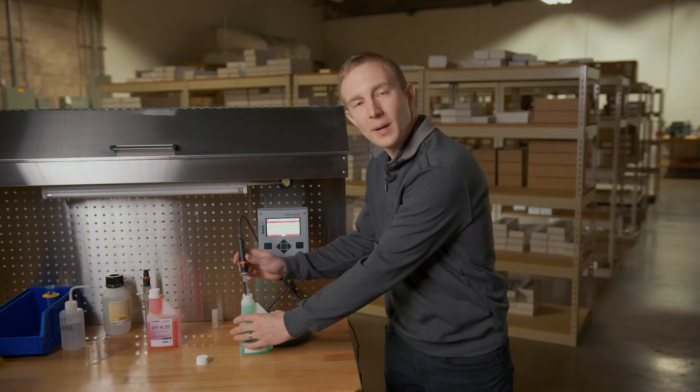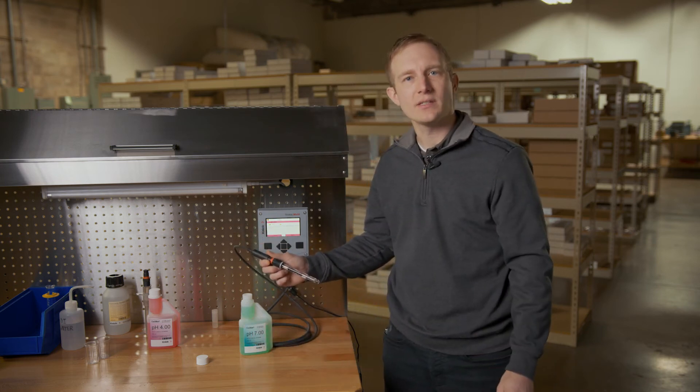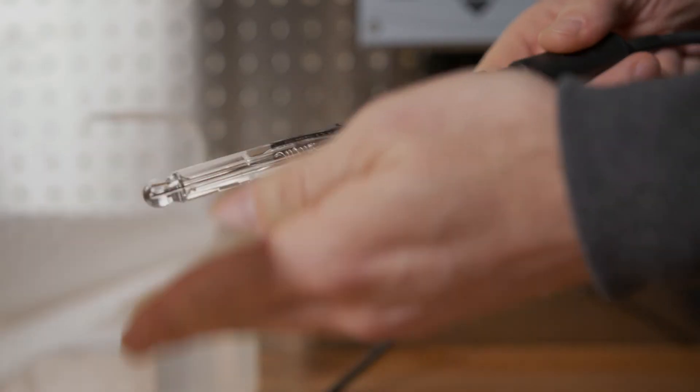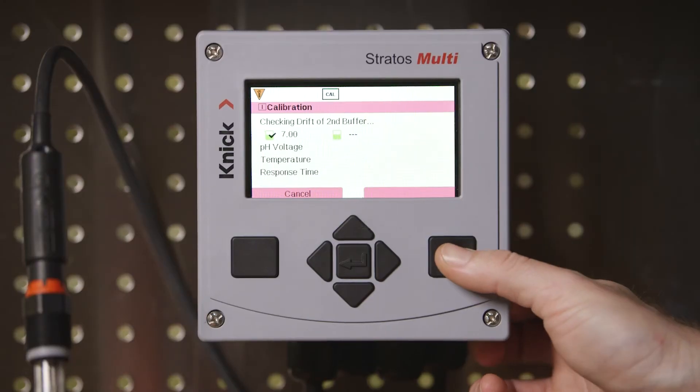Once finished in the first buffer solution, the transmitter will prompt you to again rinse the sensor and immerse it in the second buffer. We will do so and place our sensor in the buffer 4 solution. Again stir lightly and press next to proceed.